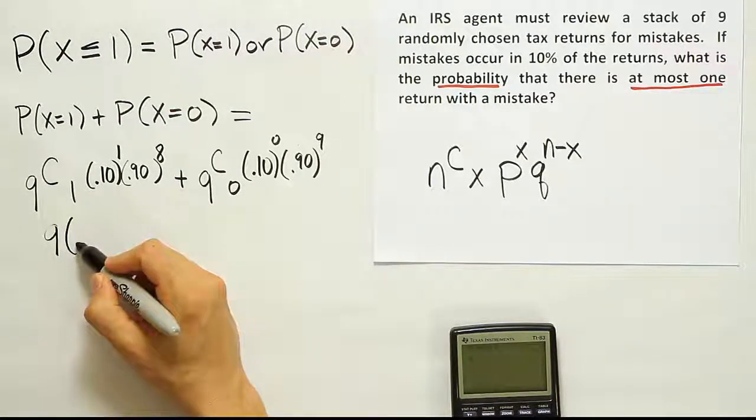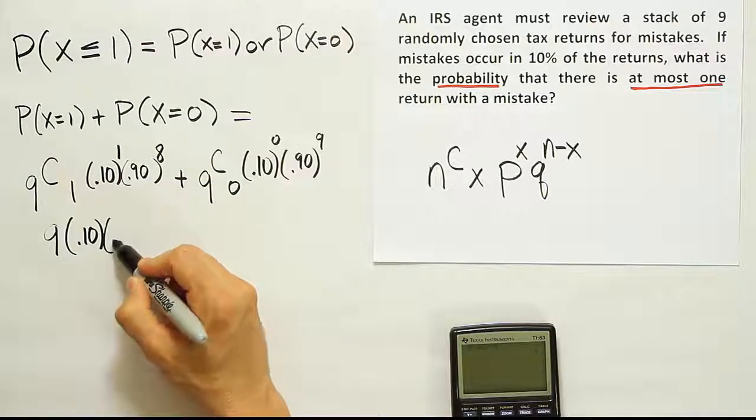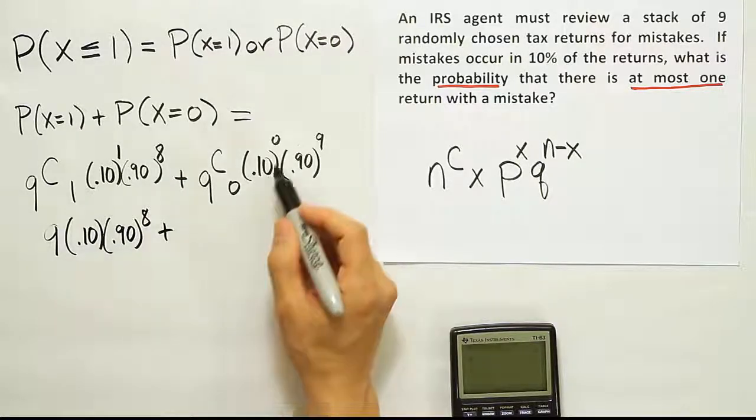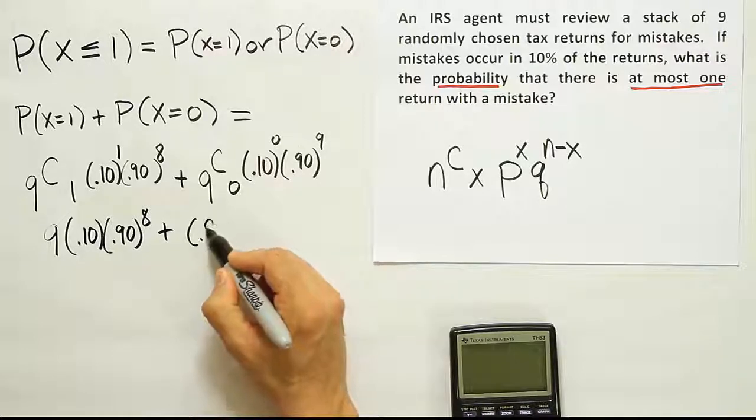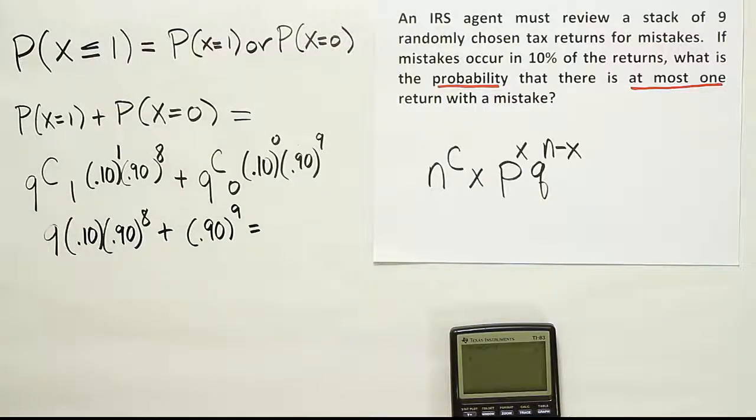So this is nine times 0.10. The one power is just 0.10 times 0.90 to the eighth power. Plus this is just one. Anything to the zero power is one. So that'll reduce to just 0.90 to the ninth power. And then we can get the solution from there.